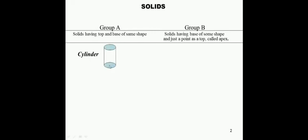Group A includes the cylinder. This is the cylinder — this is the base of the cylinder, and this is the top of the cylinder, which is circular in shape. Another type of Group A solid is prisms.